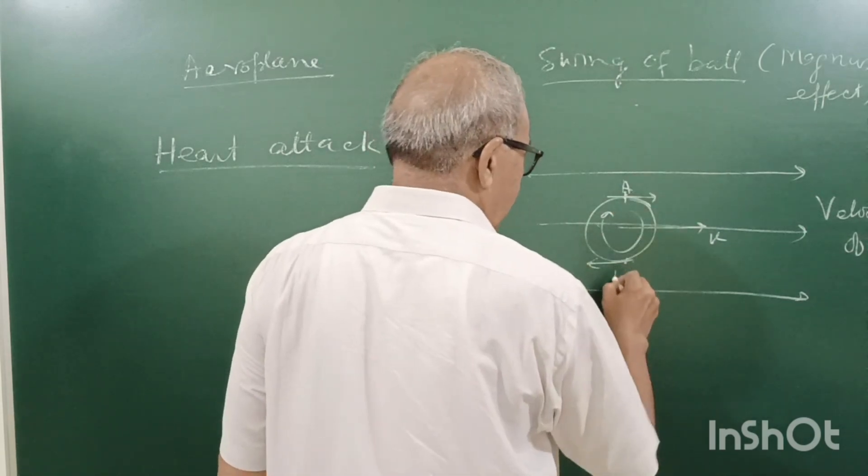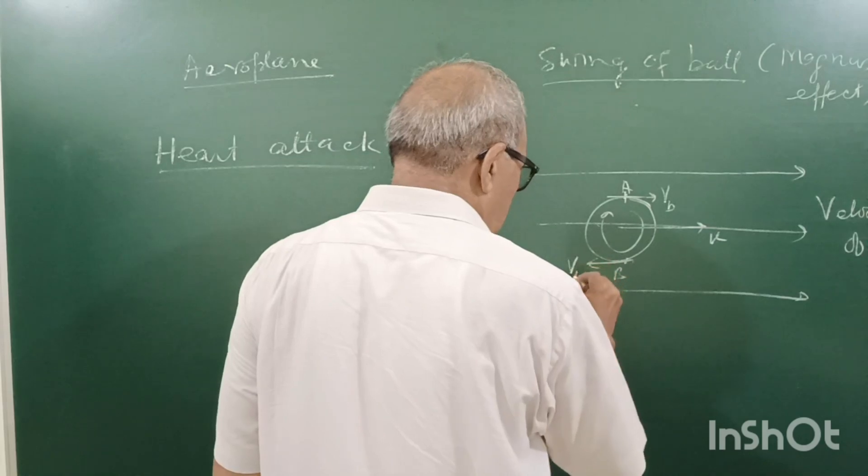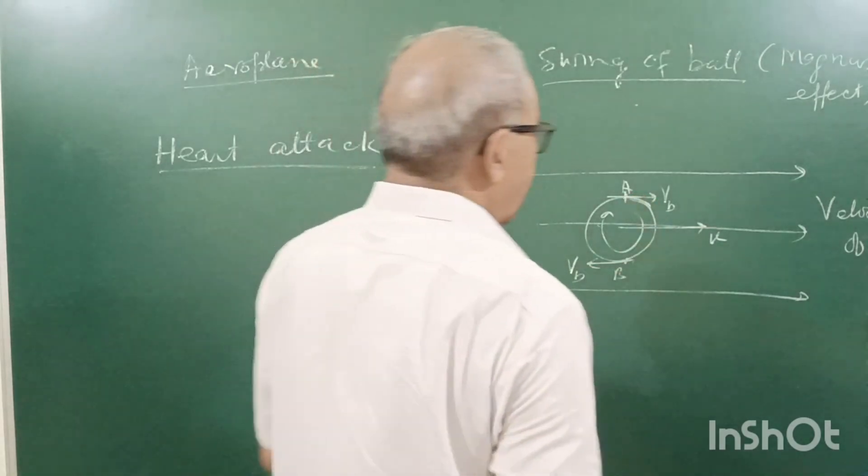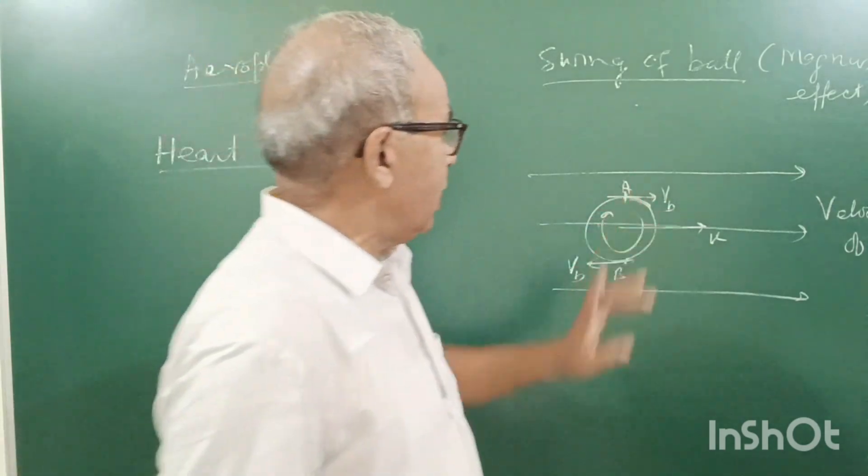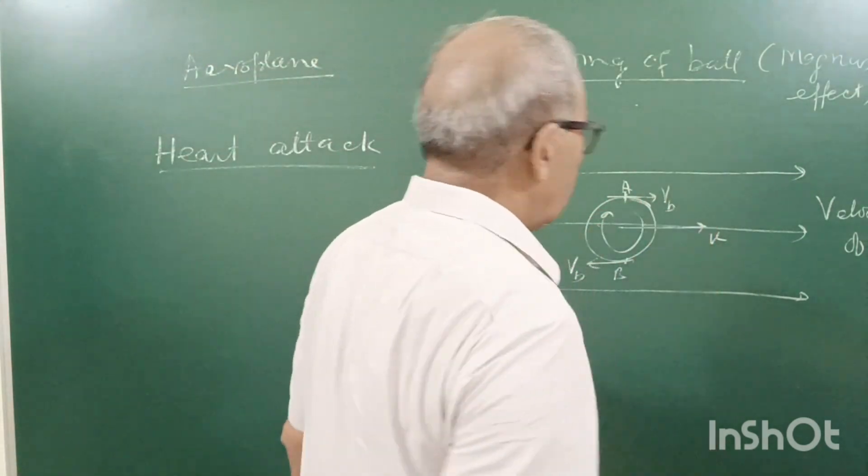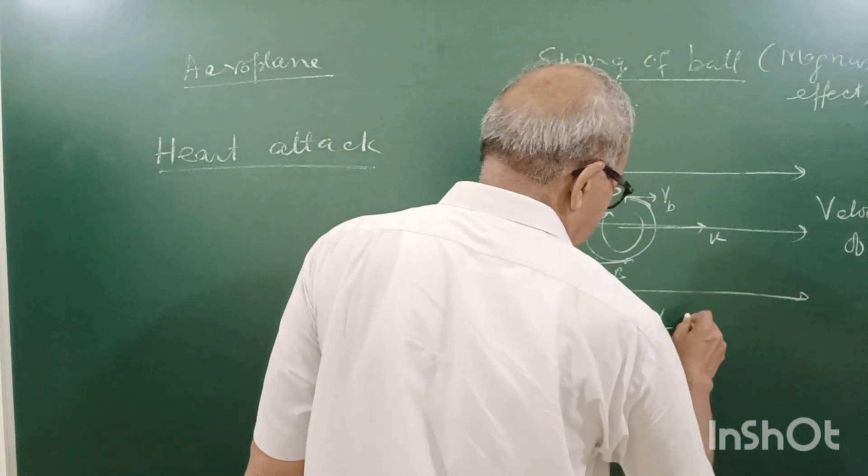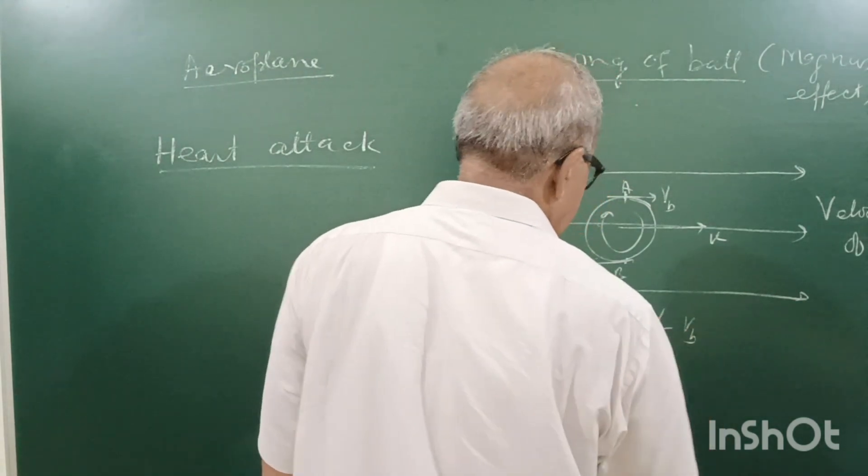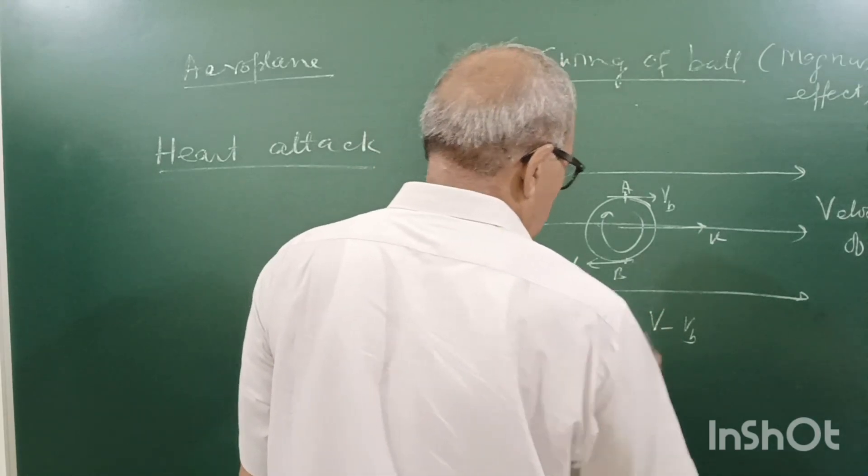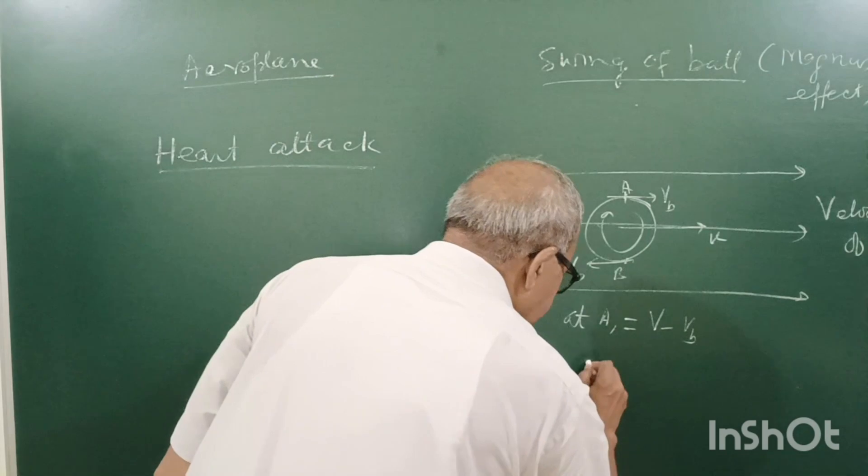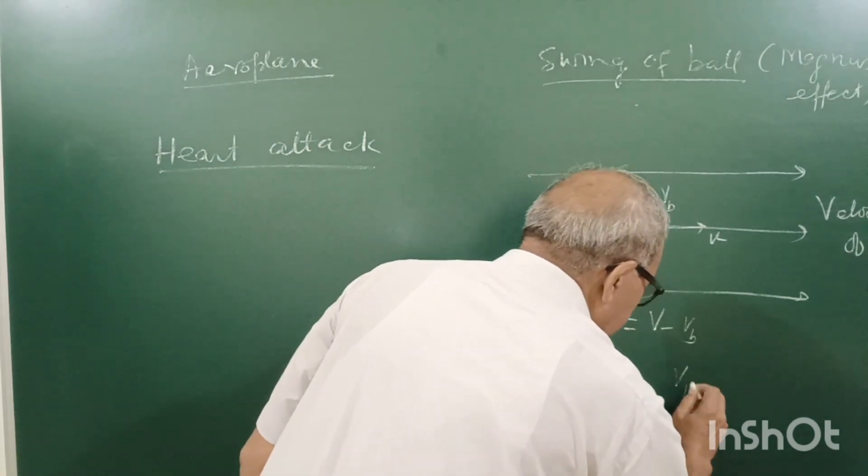Velocity of ball here. Velocity of ball. At point A, velocity VB due to spin. Velocity of ball with respect to air will be V minus VB at A. Or at B, it will be V plus VB.